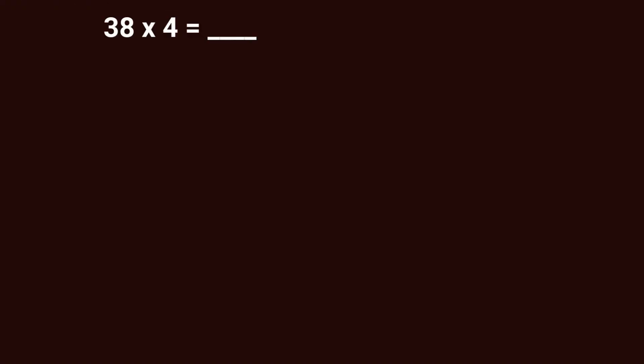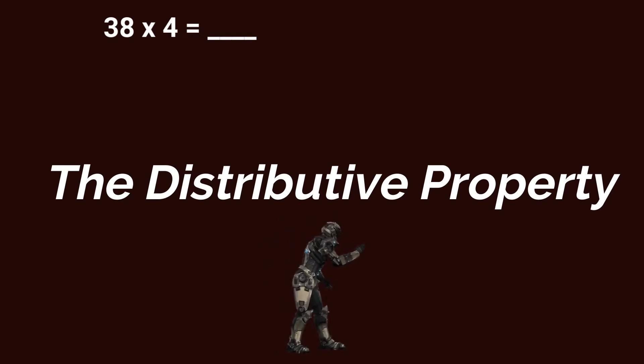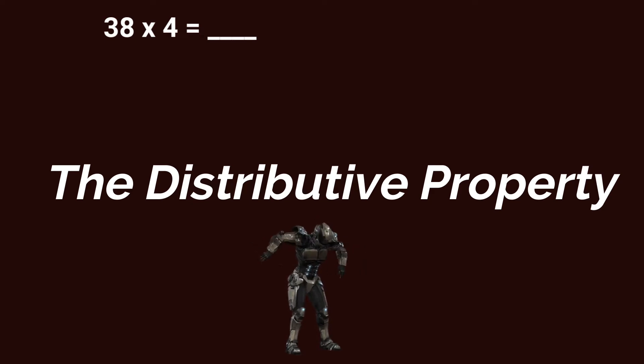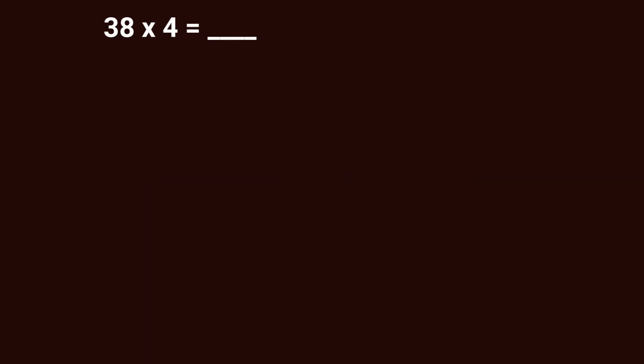Before we get to partial products, we have to understand the key concept in partial products multiplication, and that is the distributive property. We have a couple lessons on the distributive property that you can go back and watch. Basically, when we have a multiplication problem like 38 times 4, that's really saying 38 groups of 4, and we're representing that with an array.